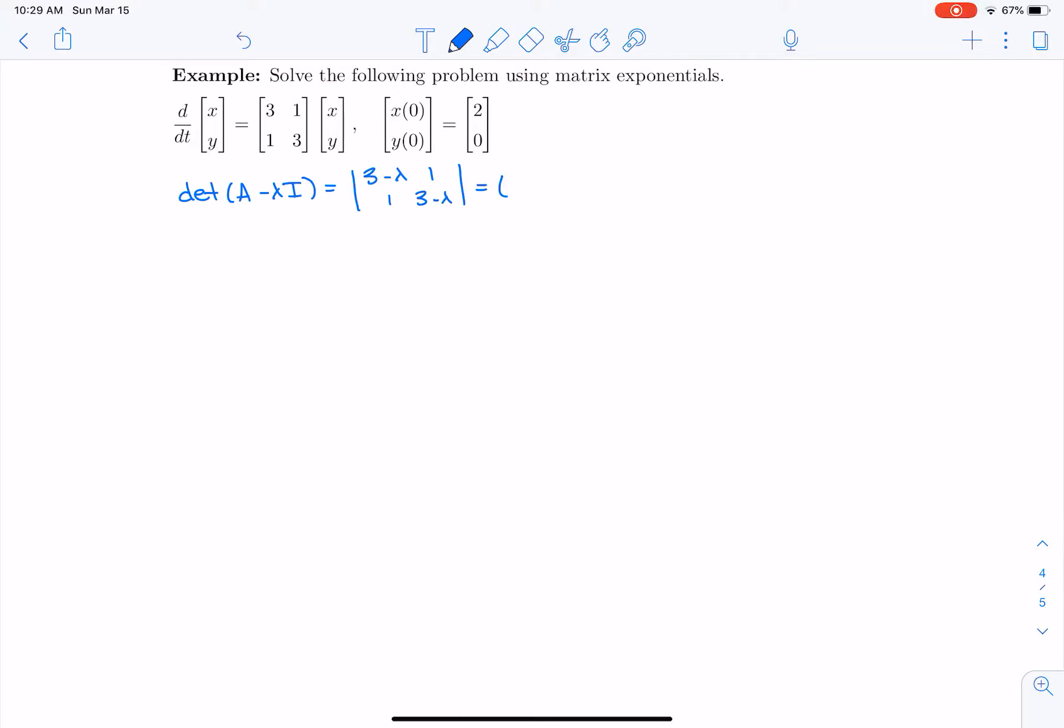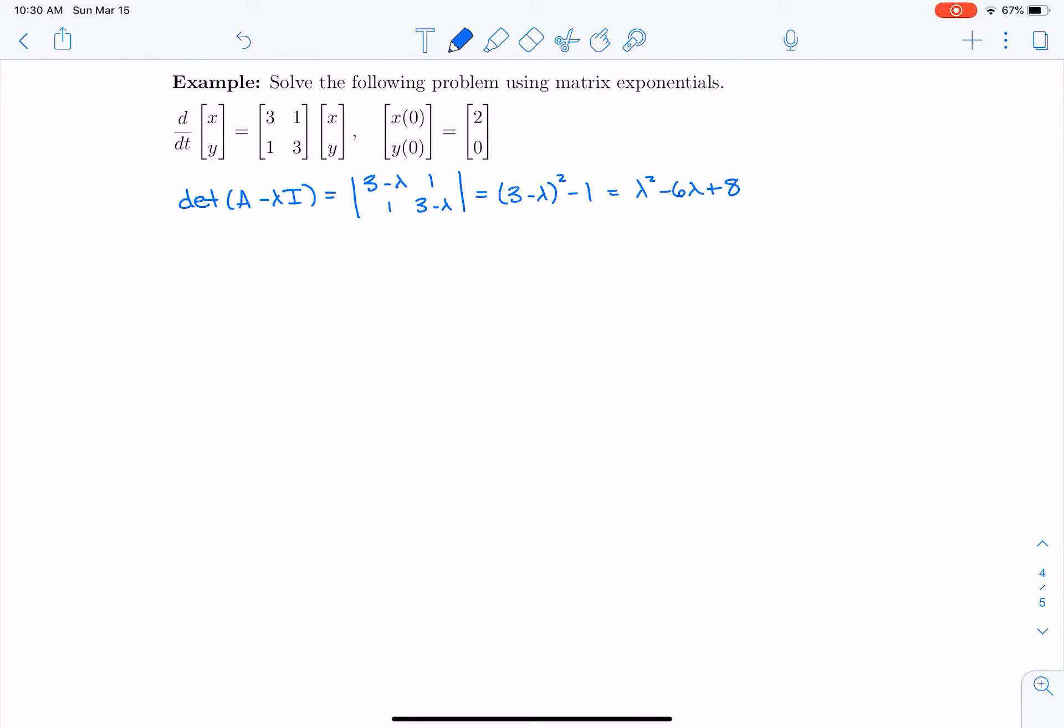That's going to give me (3-λ)² - 1. That's going to give me λ² - 6λ + 9 - 1, which gives me λ² - 6λ + 8. So I'm going to get (λ-2)(λ-4). I'm going to set that equal to 0, and that tells me that λ is either 2 or 4.